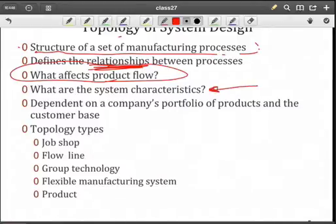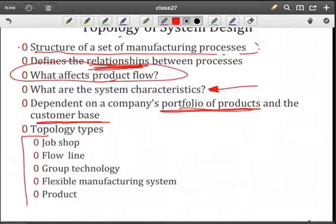In order to do this, we need to answer this question. What are the characteristics of the system based upon the portfolio of products we're producing and our customer base that we're providing those products to? The fundamental types, and there can be hybrids of each one of these, are the job shop, flow line, group technology, flexible manufacturing, and product structure. Let's take a look at these structures.